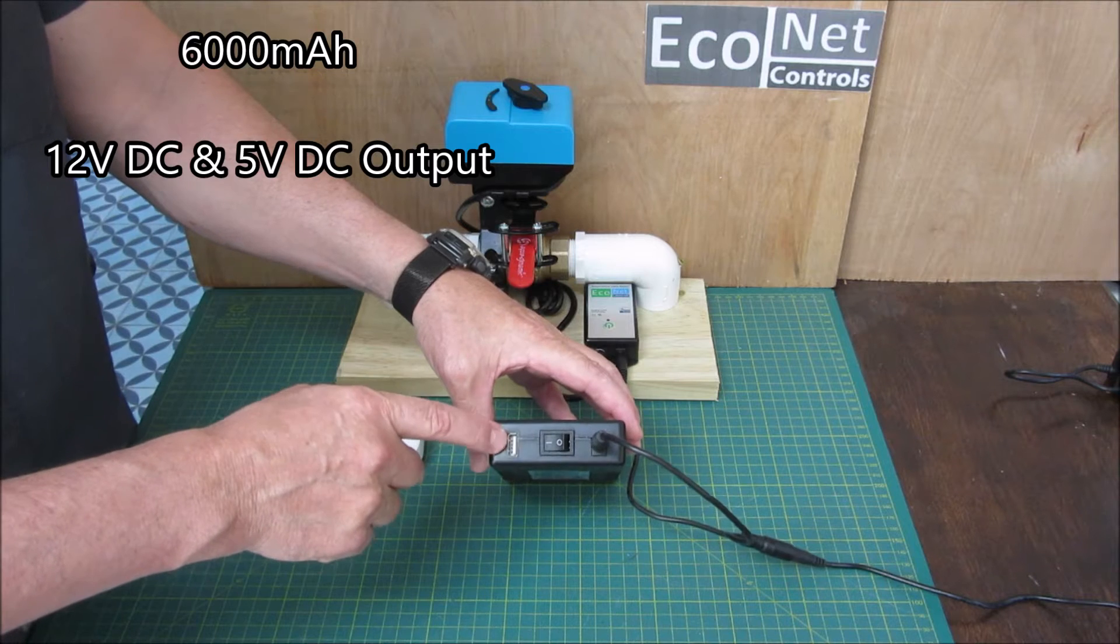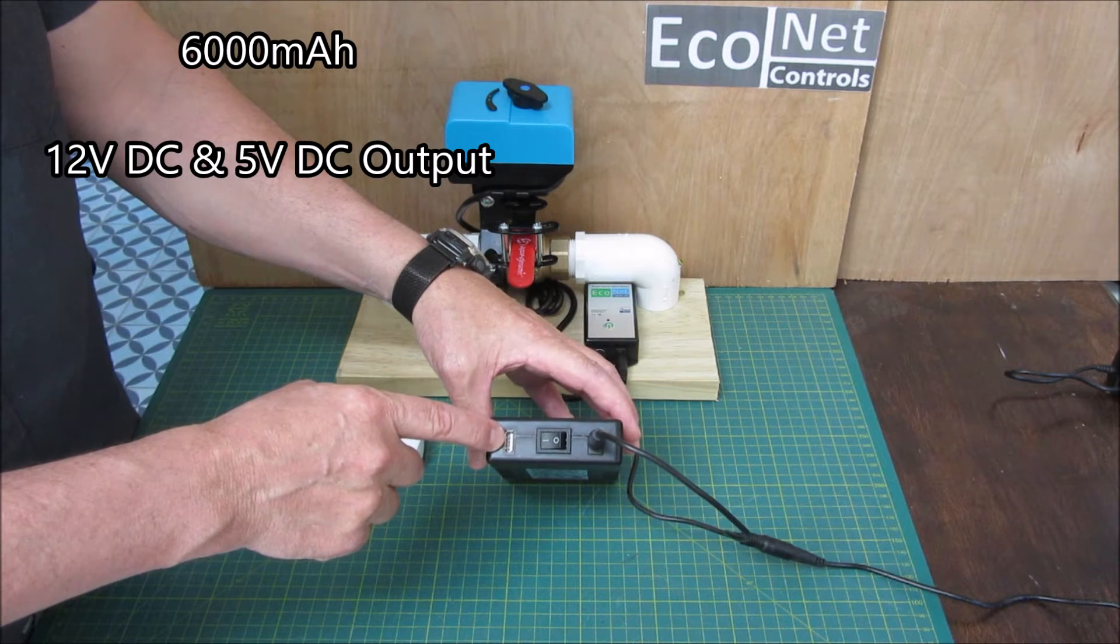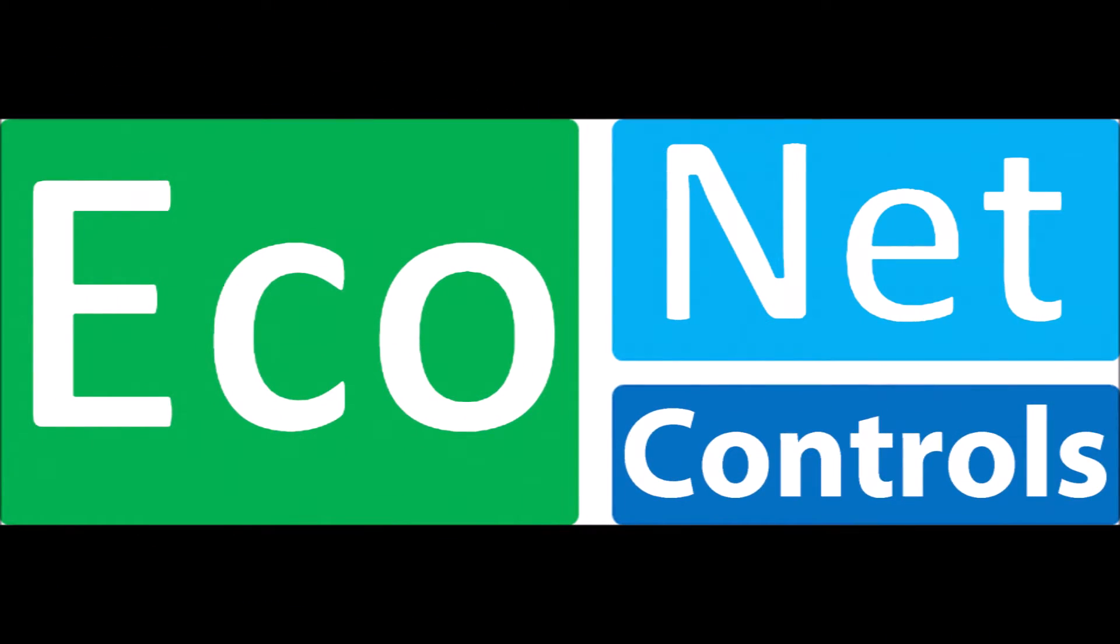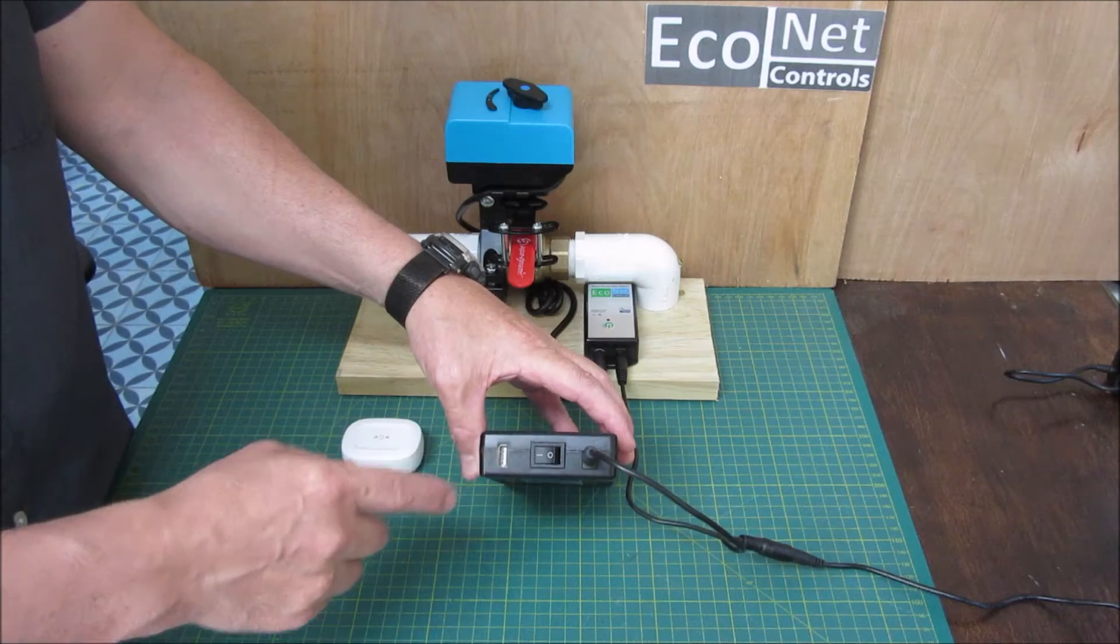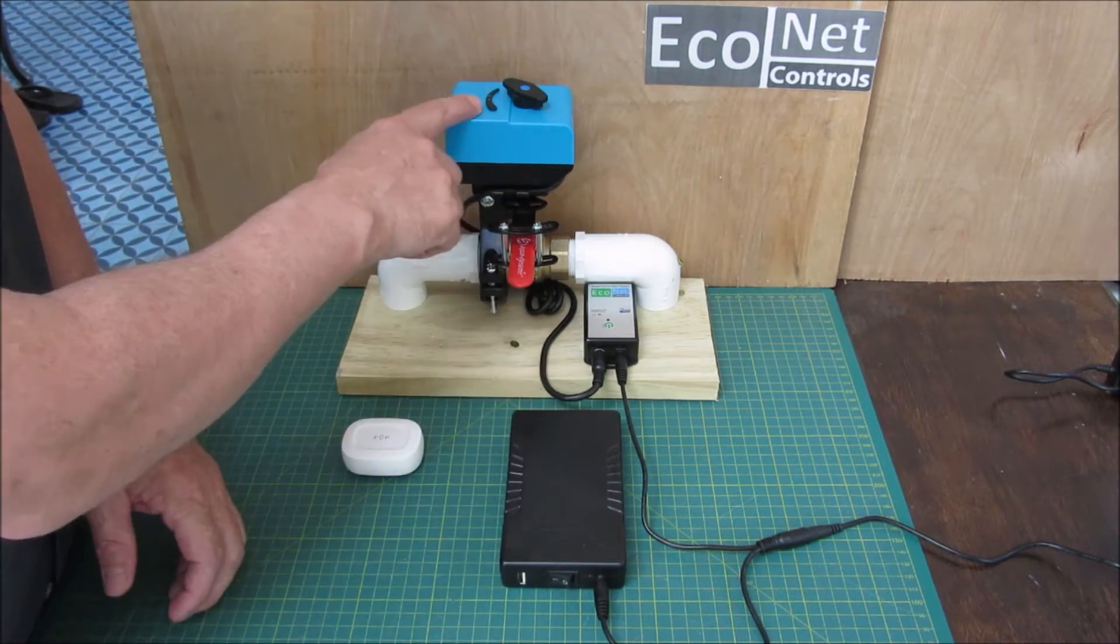So as an example you could use this port to power a smart hub that runs off of 5 volts, like the SmartThings hub. You could plug that right into that as a battery backup. But we're going to be using it for the Bulldog today.